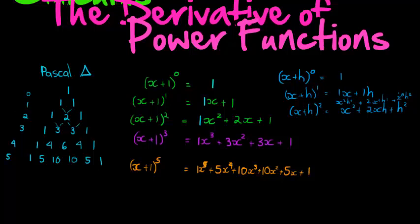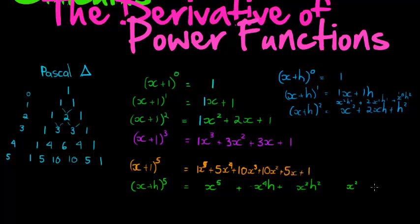Notice how the exponent for x is decreasing while the exponent for h is increasing, starting at 0. So for (x+h)^5, we'd have: x⁵h⁰ + 5x⁴h¹ + 10x³h² + 10x²h³ + 5x¹h⁴ + h⁵. The exponents for x decrease and the exponents for h increase. We simply add the coefficients from Pascal's Triangle: 1, 5, 10, 10, 5.